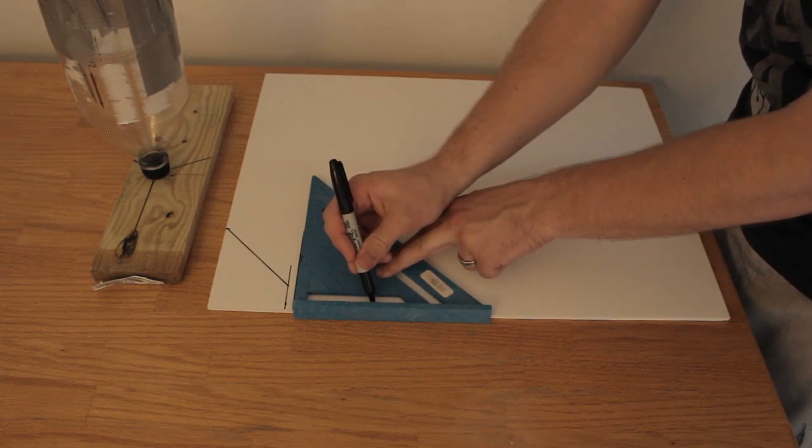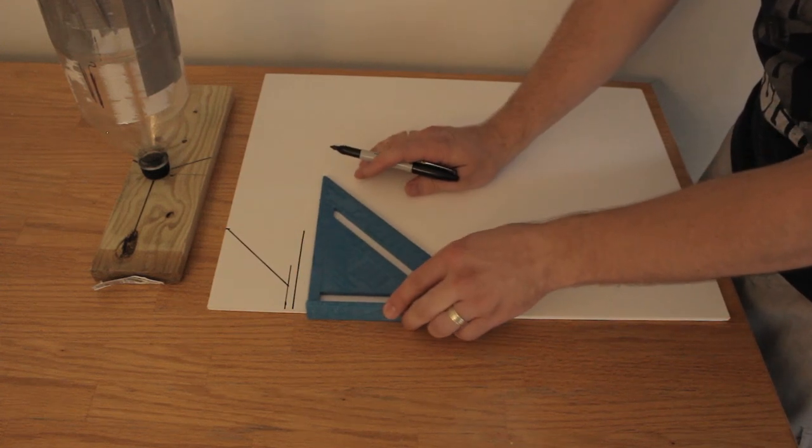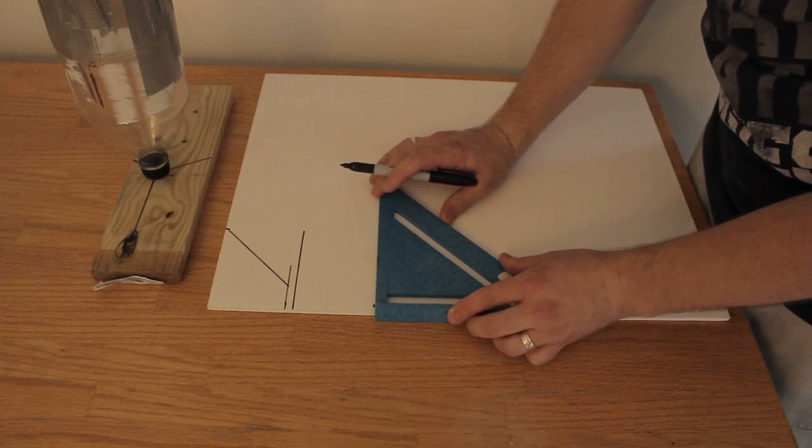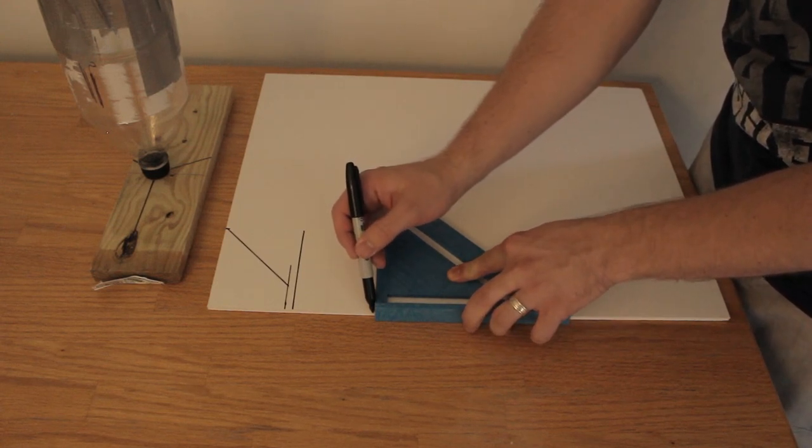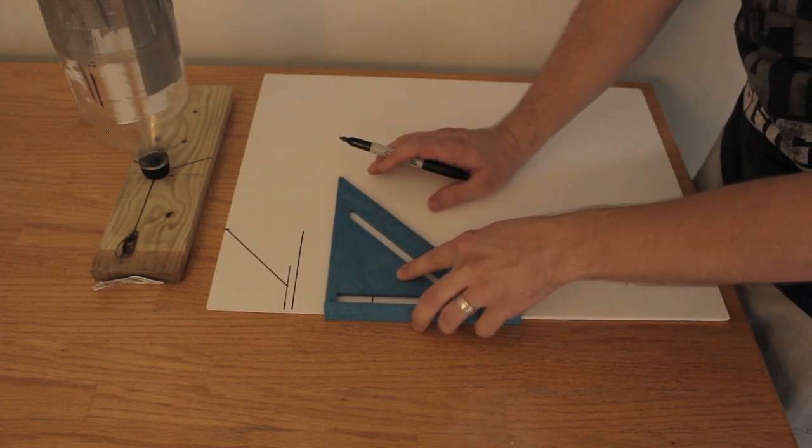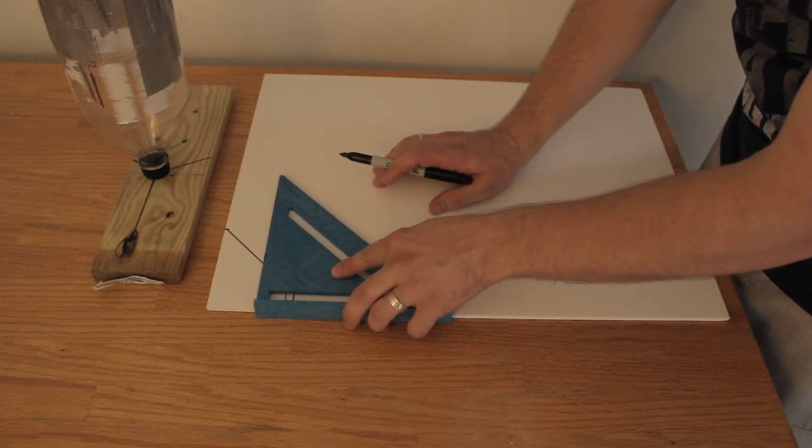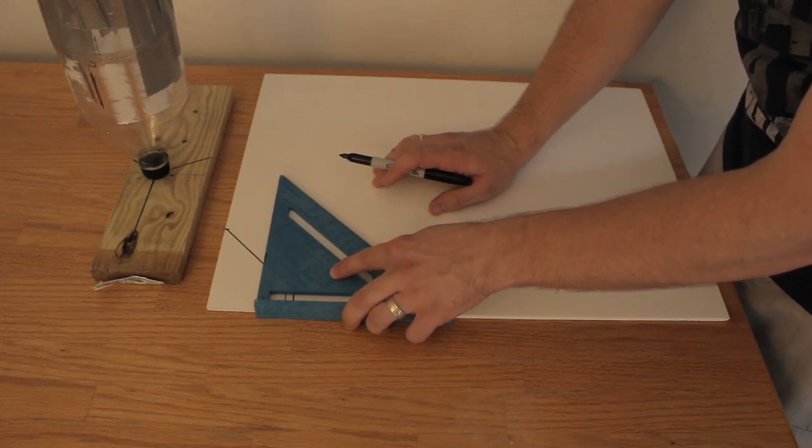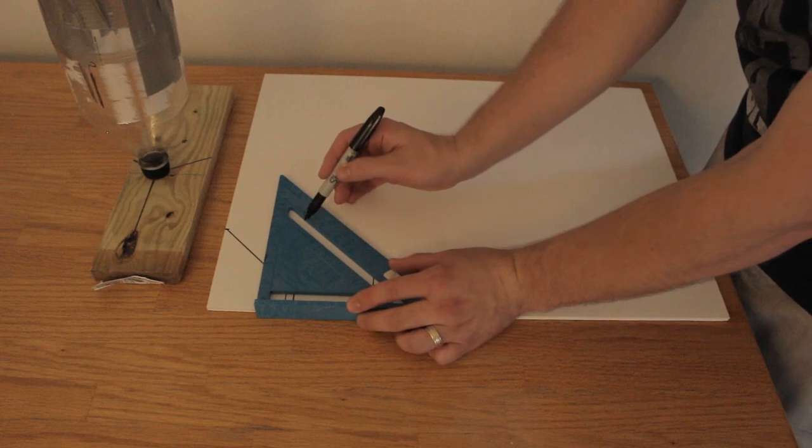Come over to my three inch line mark, draw my reference line. Go back over until I am at that four inch mark again and trace my 45 degree angle down.